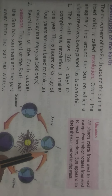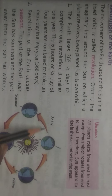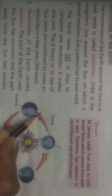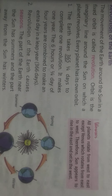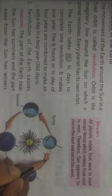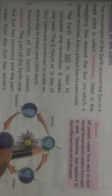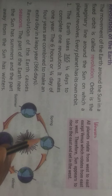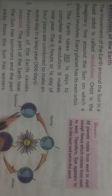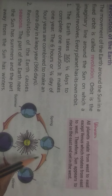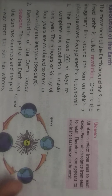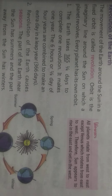An orbit is the imaginary line around the sun on which a planet revolves. Orbit means an imaginary line — ek rekha, ek line hota hai jis par planets ghumte hain. Every planet has its own orbit. Orbit means a path — jaise hum log road par chalte hain, waise hi yeh planets ka path hai.